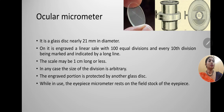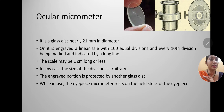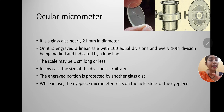Micrometry has three components: the ocular micrometer, the stage micrometer, and the combined ocular-stage micrometer which is calibrated together.